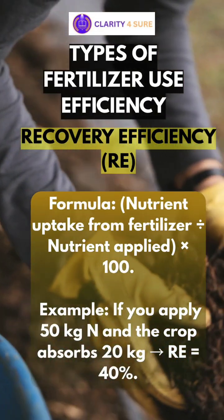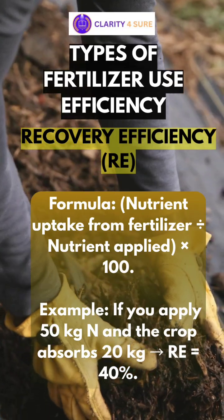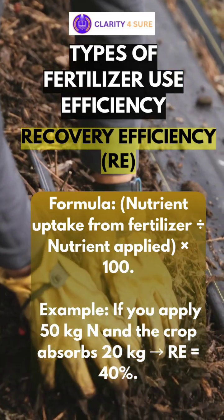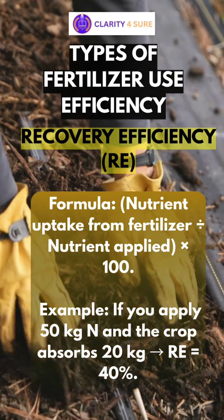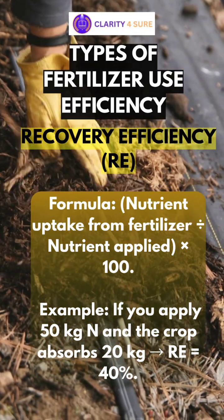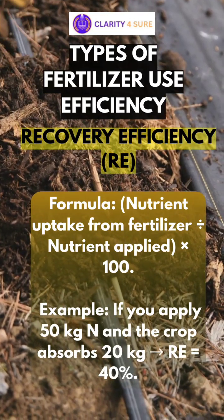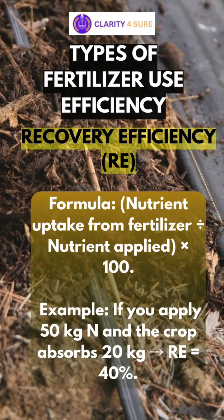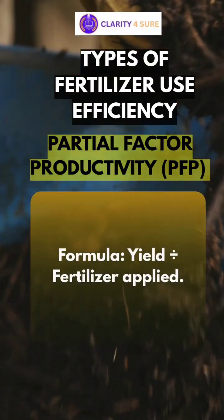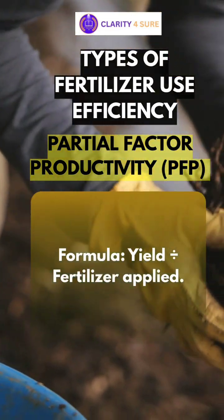The third type is recovery efficiency. The formula is: nutrient uptake from fertilizer divided by nutrient applied, multiplied by 100. For instance, if you apply 50 kg of nitrogen and the crop absorbs 20 kg, the recovery efficiency is 40%.